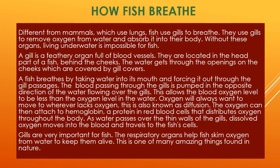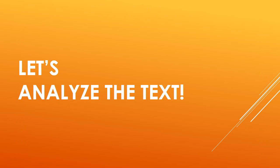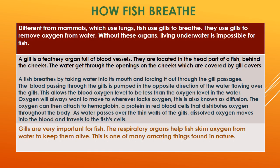Gills are very important for fish. Their respiratory organs help fish skim oxygen from water to keep them alive. This is one of many amazing things found in nature. Now let's analyze the text. This text contains three parts: the introduction, explanations, and conclusions. The introduction is what the text is about — it contains a general statement which states the phenomenon or issues to be explained.